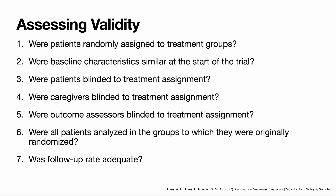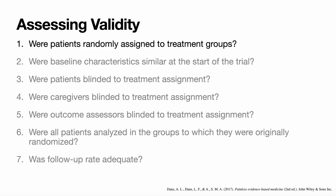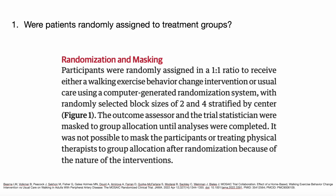We have these questions we ask when assessing the validity of an article: Were patients randomly assigned to treatment groups? Were baseline characteristics similar at the start of the trial? Were patients, caregivers, and outcome assessors blinded to treatment assignment? Were all patients analyzed in the groups to which they were originally randomized? And was follow-up rate adequate? Looking at the article's randomization and masking section, it states patients were randomly assigned in a one-to-one ratio using a computer-generated randomization system. So yes — patients were randomly assigned to treatment groups.